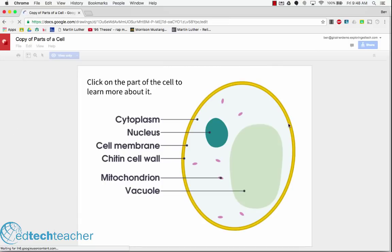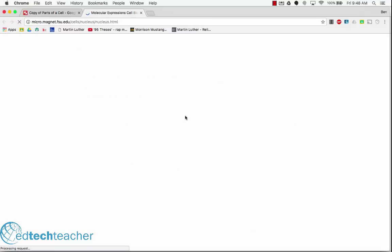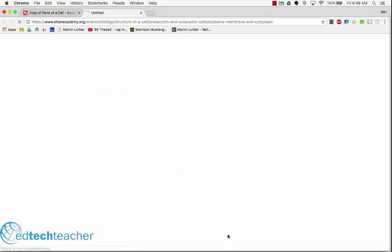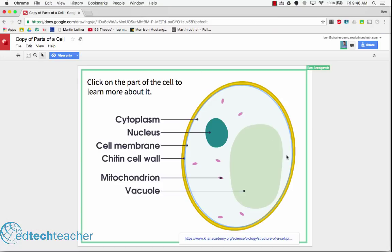Okay, this is what it looks like in view. So now as a viewer, I can click on and say, oh, let's look at all these different parts of the cell. So if I click on the nucleus, I get the link to the nucleus. If I click on the membrane, I get the link down here to that Khan Academy. So this is really cool in that now you've created an interactive drawing.